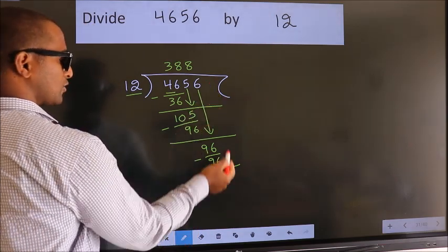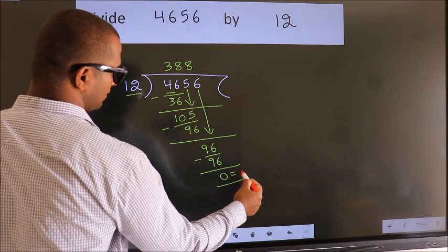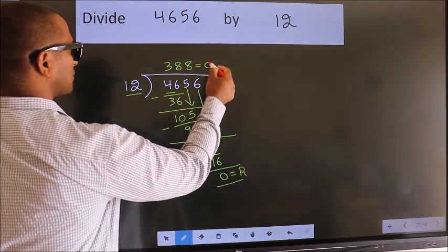No more numbers to bring down. So we stop here. This is our remainder. This is our quotient.